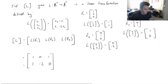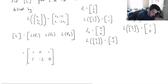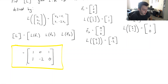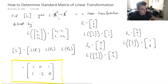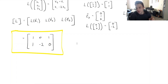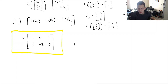This is our standard matrix, and it describes the linear transformation. When we multiply this matrix by some vector in R3 — since we're taking a vector from R3 to R2 — it describes the function, just in terms of a matrix. Now let's look at an example where it's not as easy, and the function isn't explicitly described for us.